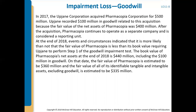After the acquisition, Pharmacopia continues to operate as a separate company and is considered a reporting unit. Upchain now owns Pharmacopia, but they are still doing separate financials — it's still a separate company, just now owned by Upchain. At the end of 2018, events and circumstances indicated it is more likely than not that the fair value of Pharmacopia is less than its book value, requiring Upchain to perform step one of the goodwill impairment test. The book value of Pharmacopia's net assets at the end of 2018 is $440 million, including the $100 million in goodwill.